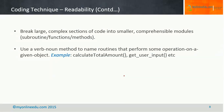The next point is to use a verb-noun method to name routines that perform some operation on a given object. Always start with a verb. For example, calculateTotalAmount or get_user_input — everything starts with a verb. Looking at get_user_input, I know that this function is getting the user input. Starting with a verb helps a lot to understand what a particular function or method is actually doing. It's a good practice.